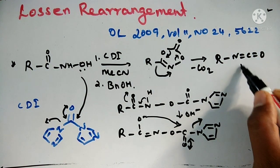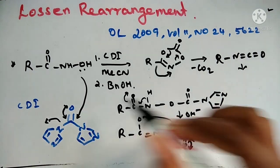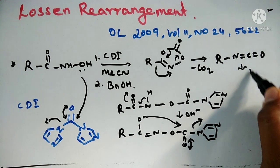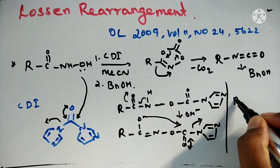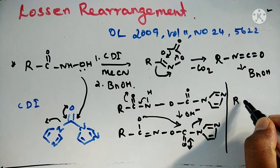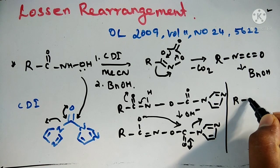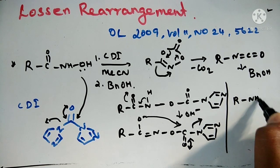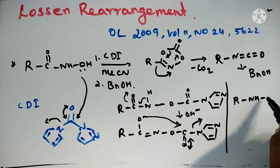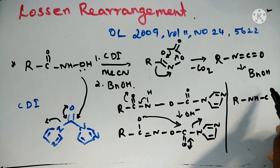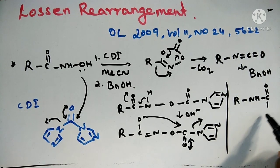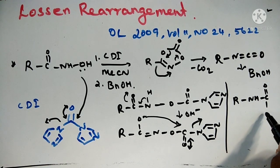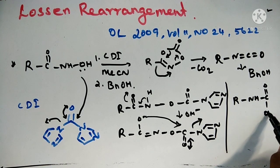The next step involves benzyl alcohol reacting with the isocyanate. What you will get is R-NH-C(=O)-O-benzyl — a benzyl carbamate product.